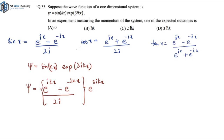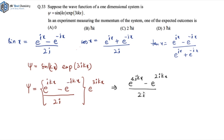On multiplying, I get e^(4ikx) minus e^(2ikx), all divided by 2i. This is because 3+1 = 4 and 3−1 = 2. So my new wave function is psi = [e^(4ikx) − e^(2ikx)] / 2i. Now I can apply my momentum operator on this and get the correct answer.